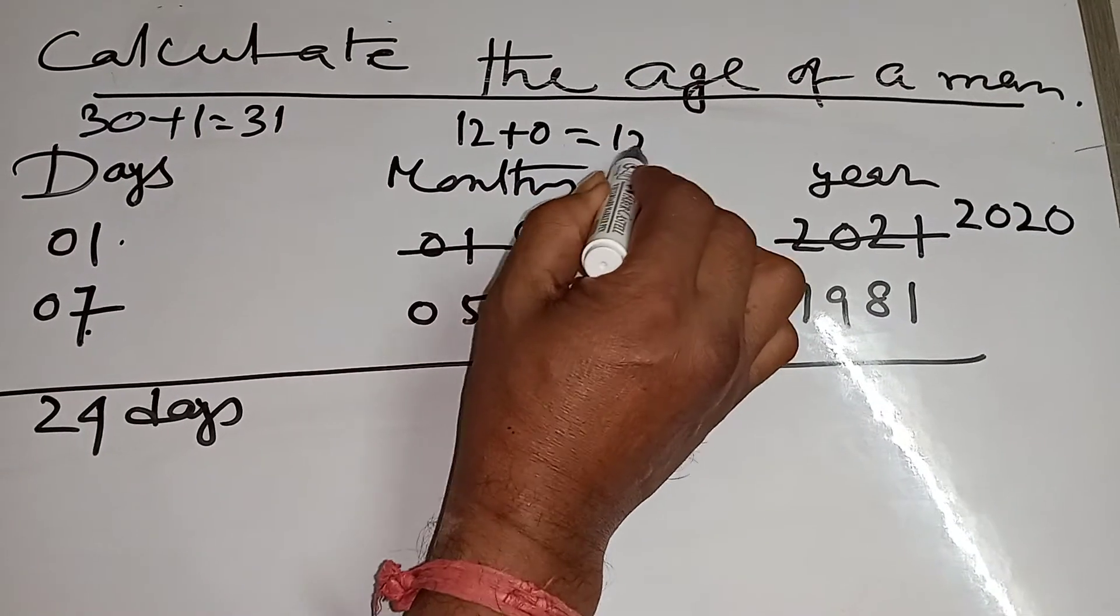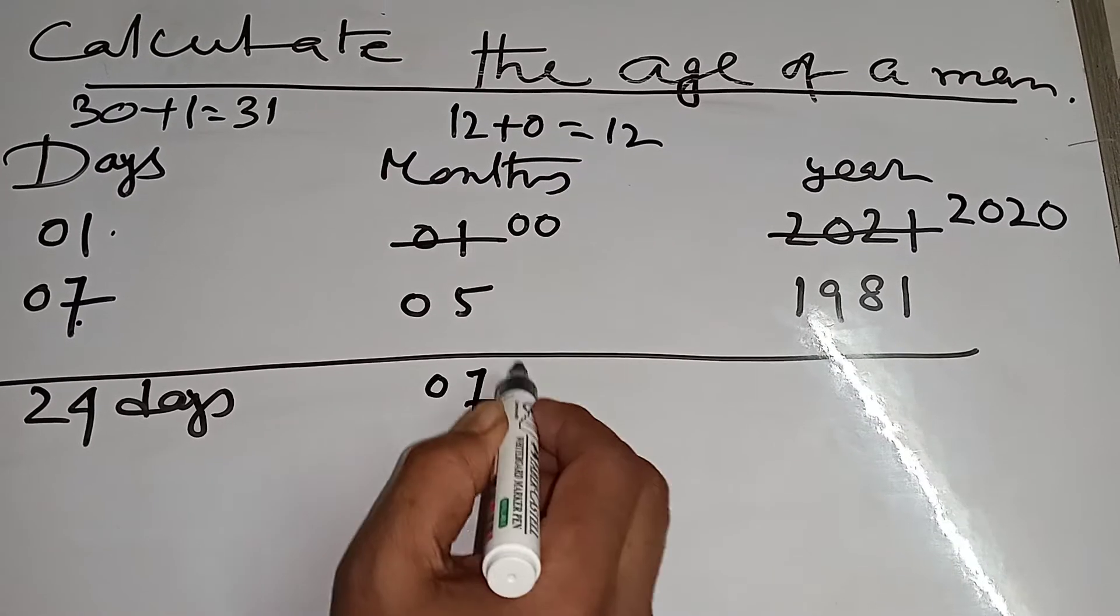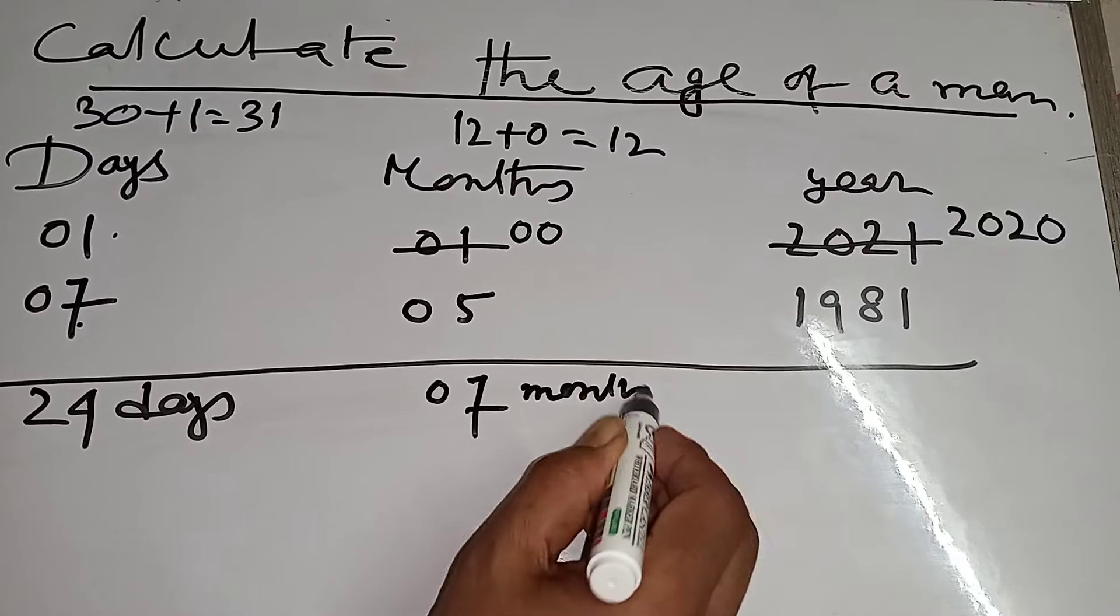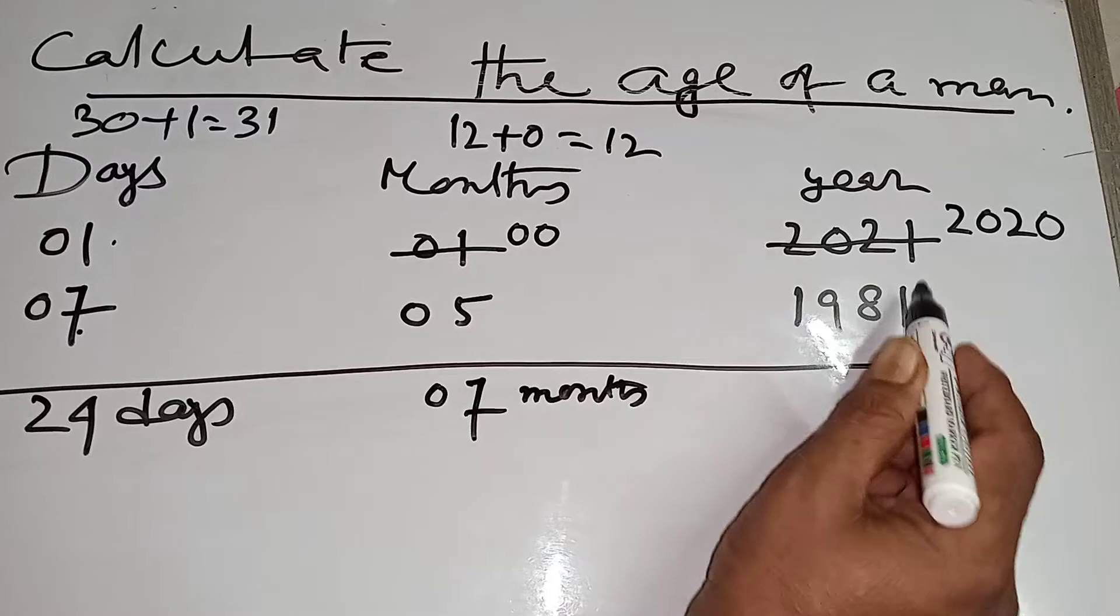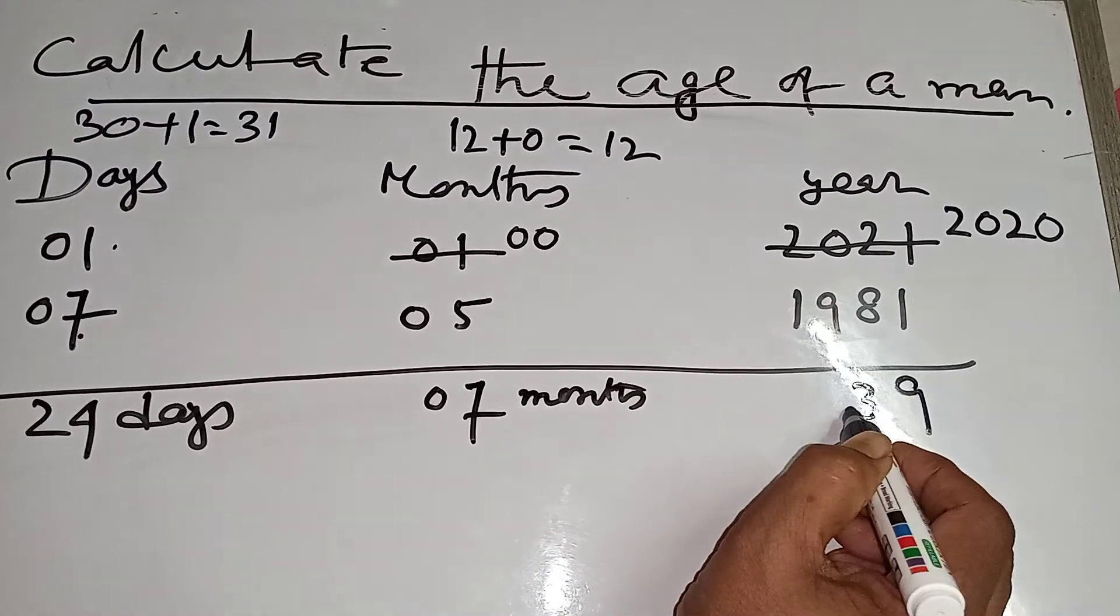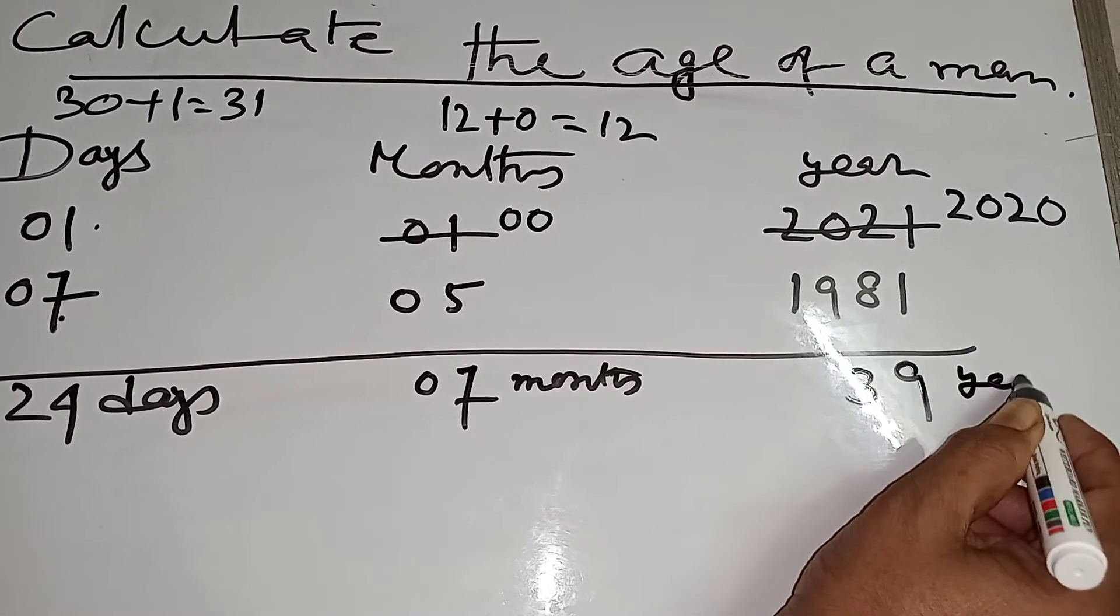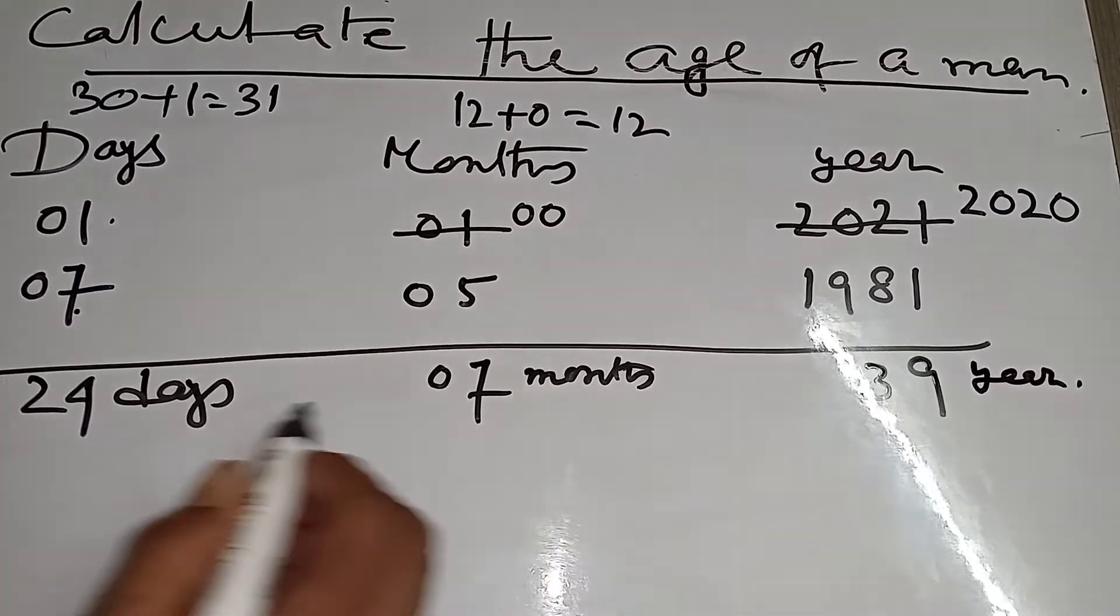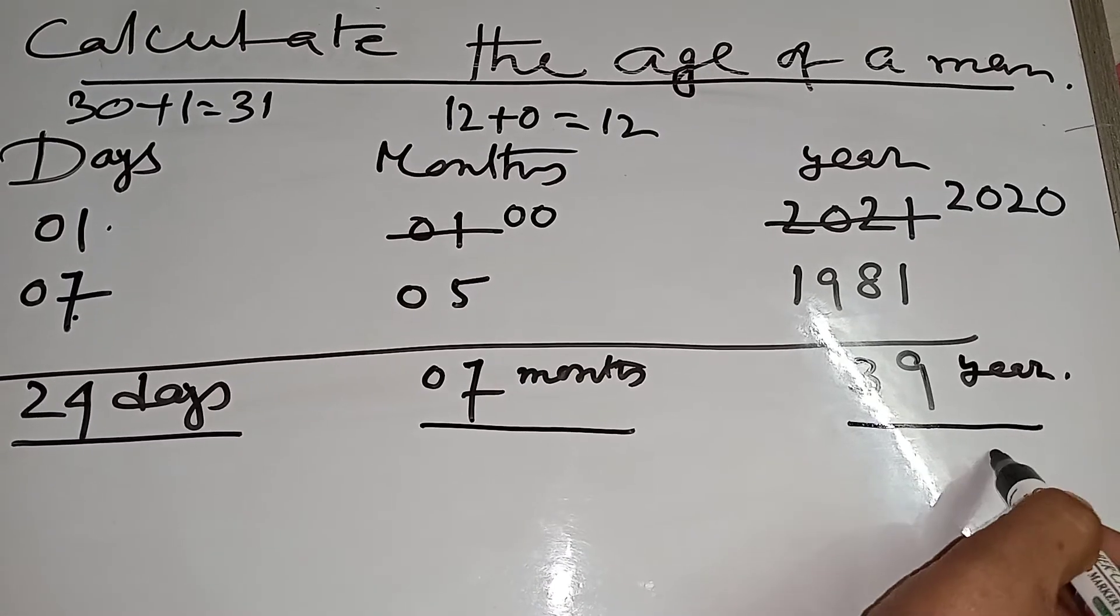That means 12. Now subtract 12 minus 5, that means 7 months. And subtract 2020 minus 1981. 12 minus 8, that means 3, that means 39. The age of a person is 24 days, 7 months, 39 years.